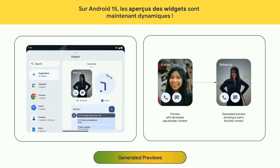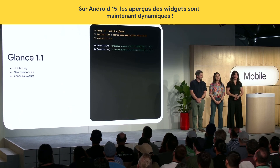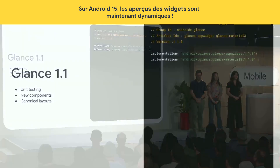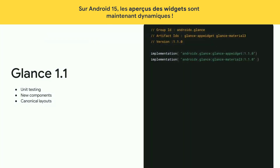Generated previews are coming to Android 15. Using Glance, you can emit a remote view to be used in the Picker preview, instead of just a static resource. Glance 1.1 is now available and in Release Candidate, bringing a new unit test library, error UIs, and new components.